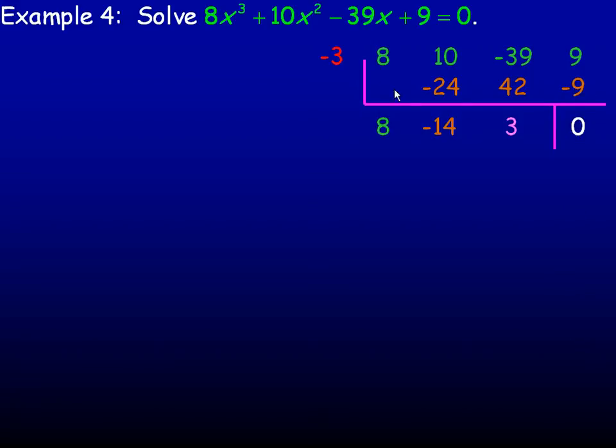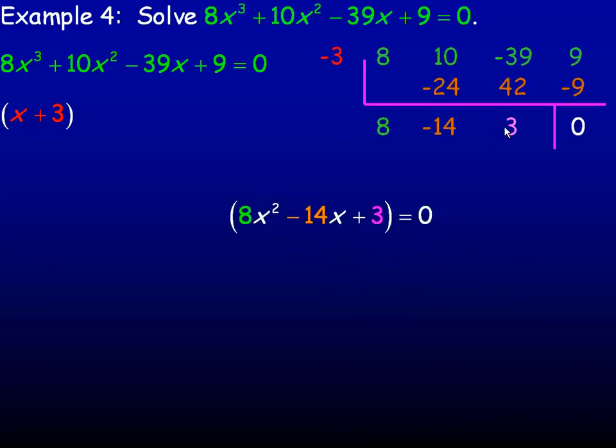So that worked. Negative 3 works, so x + 3 is a factor. So there is our equation. Since negative 3 worked, x + 3 is a factor, and so 8x² - 14x + 3 is the trinomial factor that is left.